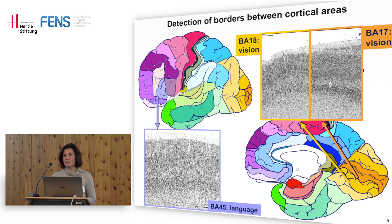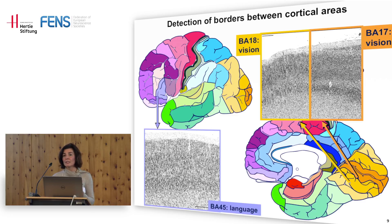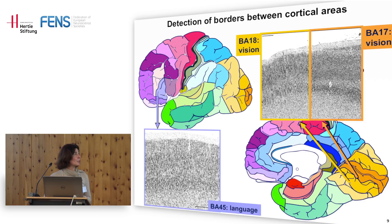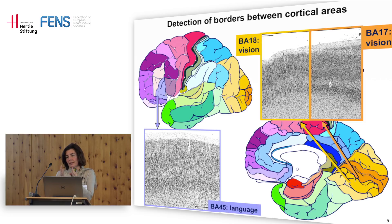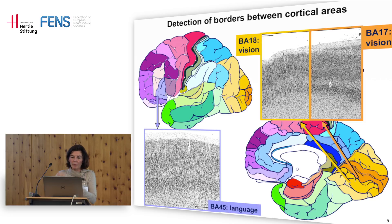What Karl Zilles developed over the years with his group was a way of quantifying these differences. His idea was that we need expertise — people who can look down the microscope and see differences in the laminar patterns of cell distributions — but we also need a way of significantly identifying the borders, not just saying 'I think layer 2 changes here because it becomes less dense.' We want significant differences.